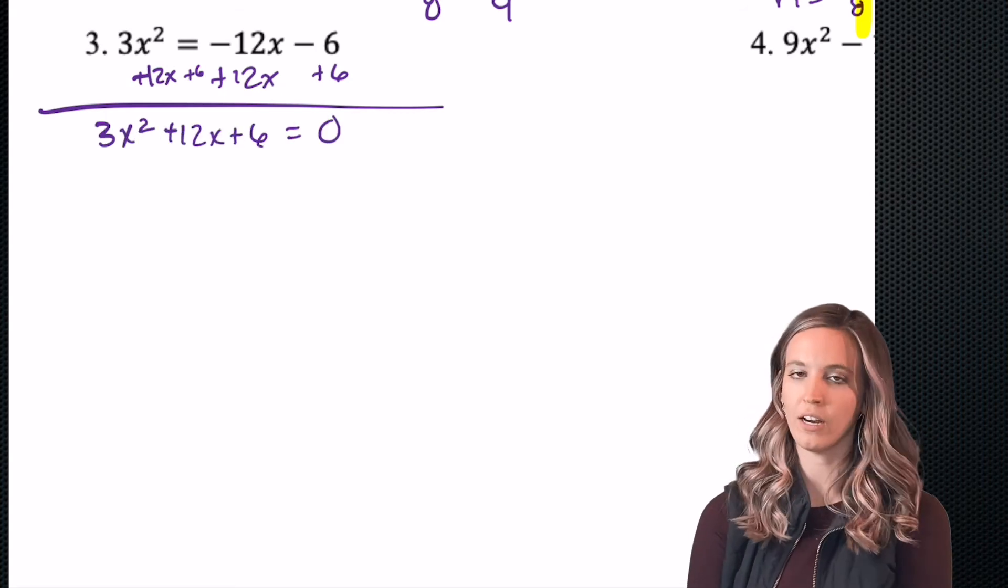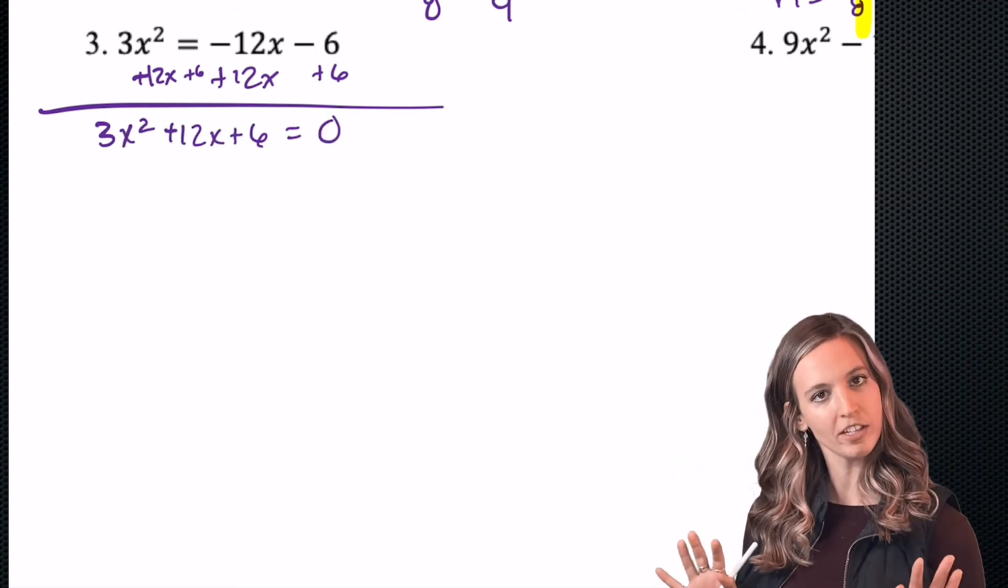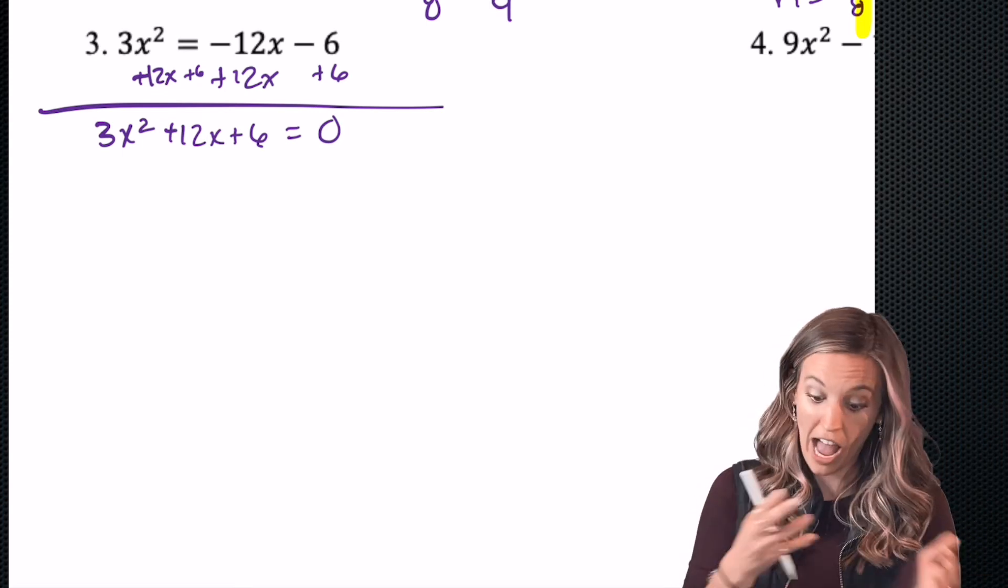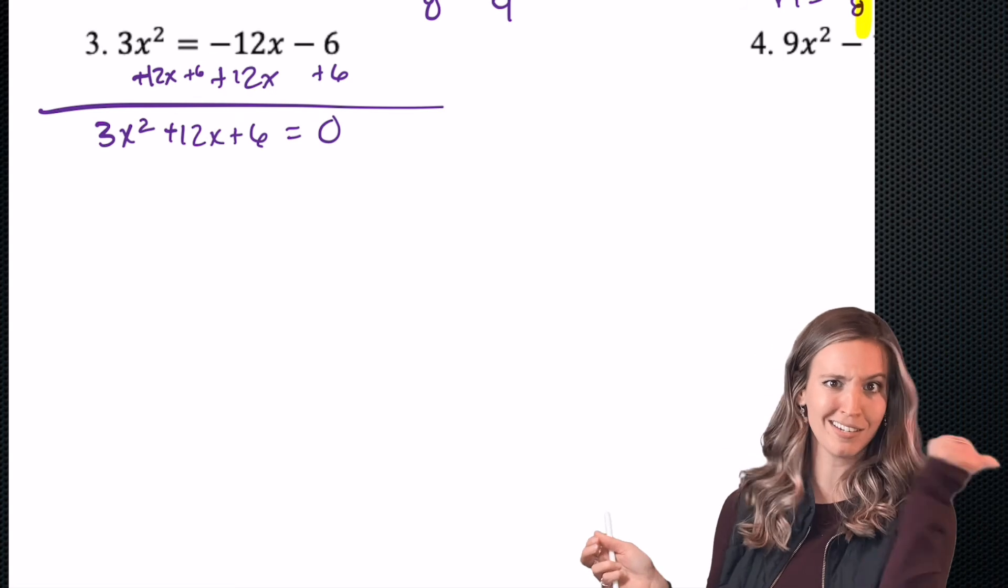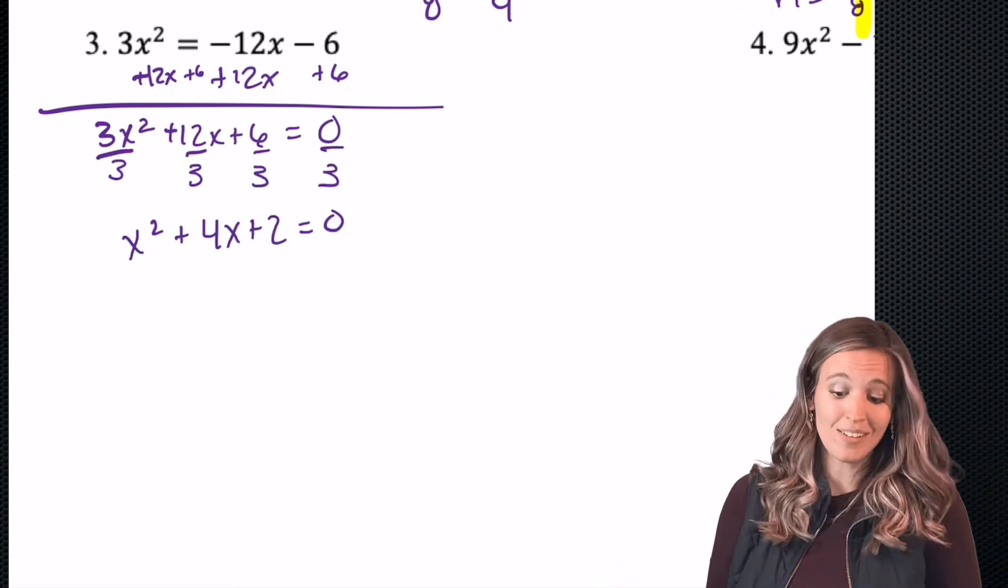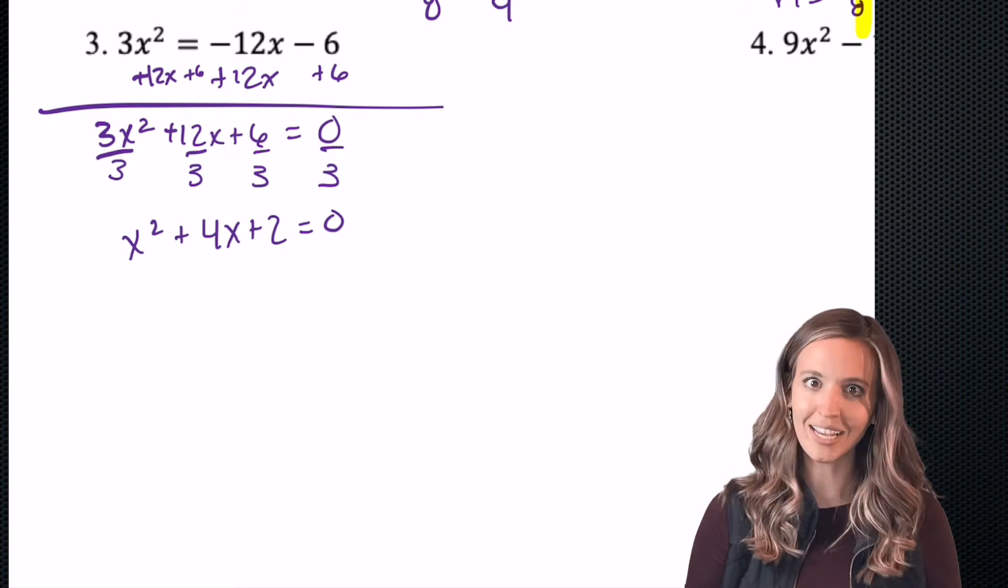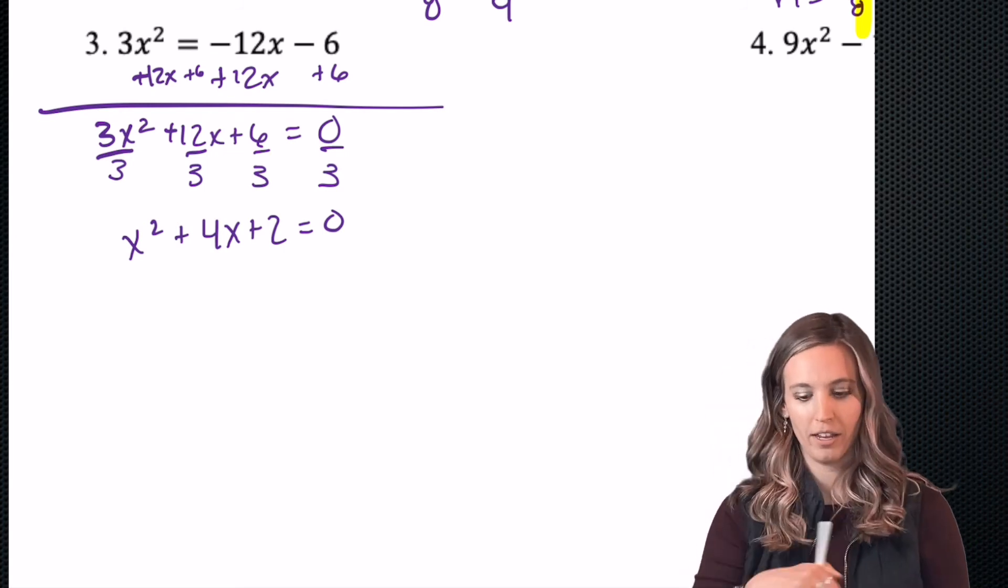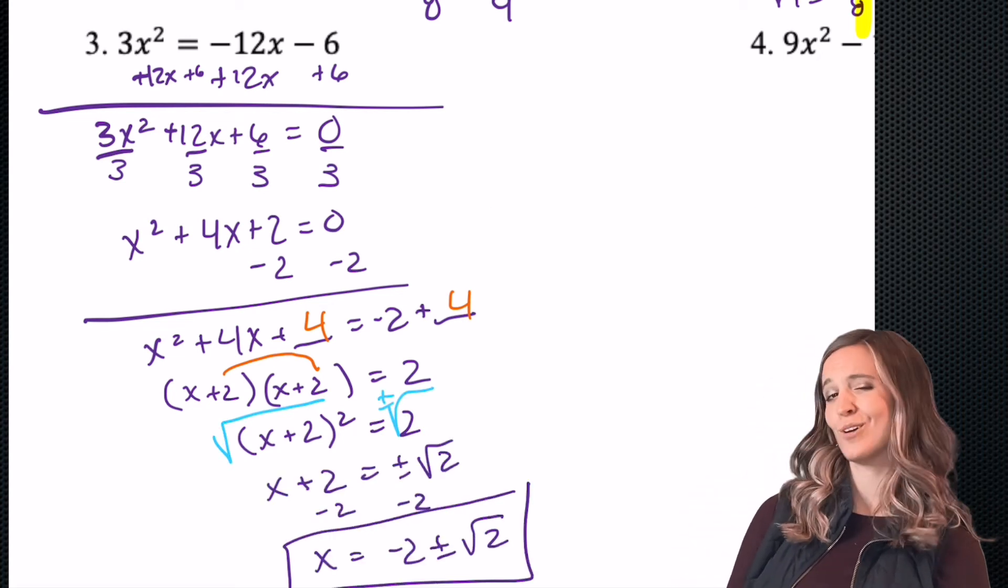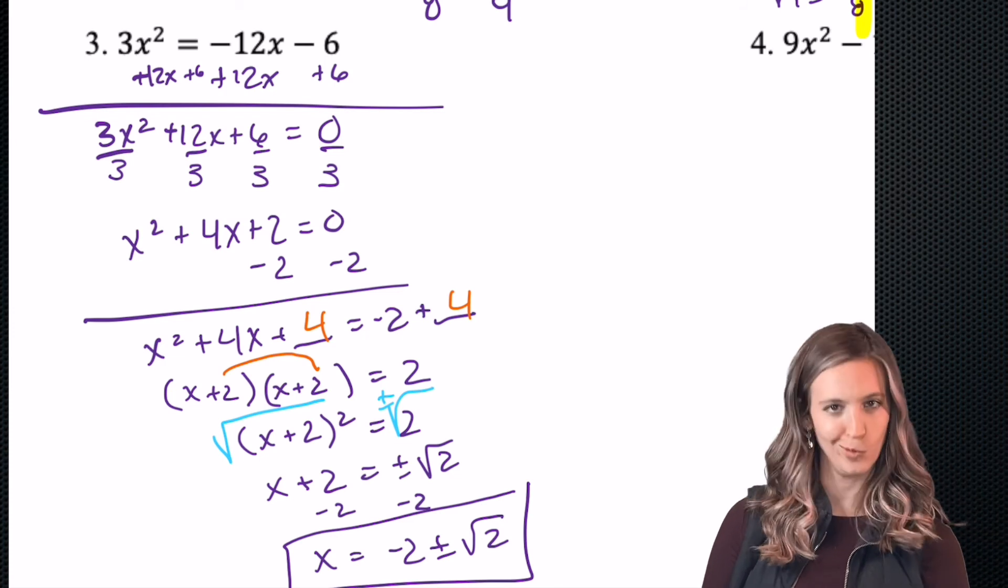Hmm, so what do I notice here? I want to exhaust the better methods first, so like factoring or completing the square. If I start strong, 3 goes into all three terms, so let's divide out that 3. Look at that. It doesn't factor, but a is 1, so I can complete the square. Go for it. Completed the square and got x equals negative 2 plus or minus root 2. Way faster than quadratic formula.